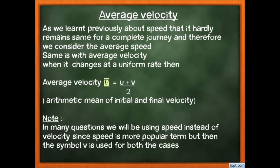Average velocity V-bar = (u + v) / 2, where u is initial velocity and v is final velocity. We can also write it as V_av. In many questions, speed is used in place of velocity and the same formulas apply. The symbol V is used for both speed and velocity.